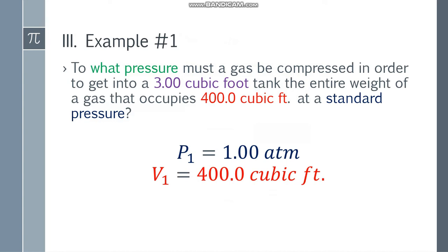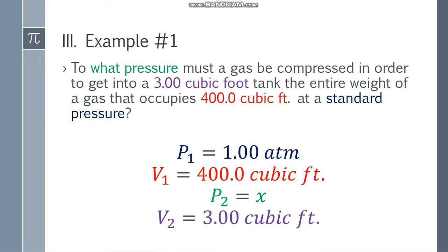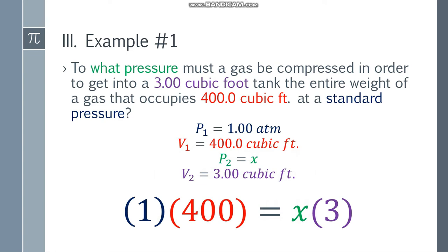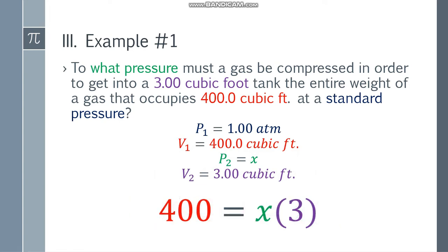Our initial volume will be 400.0 cubic feet, and our resulting pressure is what we are asked to find, so I'll put x. The resulting volume will be 3.00 cubic feet. Since we already have the four variables, we can apply the formula: P1 V1 = P2 V2. Substituting the values: 1 times 400 equals x times 3. Simplifying, the left side gives us 400.